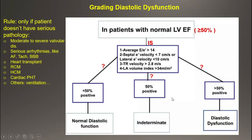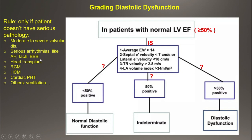Now let's look at the new guideline. Based on the new guideline on diastolic dysfunction evaluation, we can divide patients into three groups. First, those with serious pathology — including moderate to severe valvular disease like MR or mitral annular calcification, serious arrhythmias like atrial fibrillation, tachycardia, bundle branch block, heart transplant, restrictive cardiomyopathy, hypertrophic cardiomyopathy, pulmonary hypertension, or patients under ventilation or in critical states such as septic shock. In those cases, evaluation of diastolic function is complex and will be covered in a separate lecture.